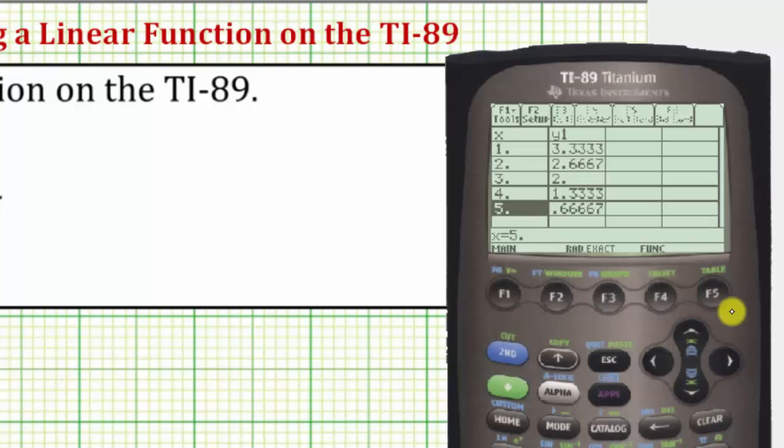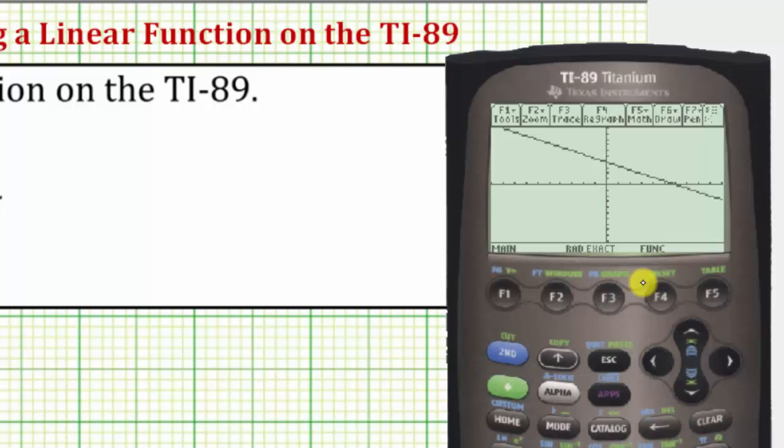Let's also go back to the graph now by pressing diamond F3. Another way to find points on the line would be to adjust the window so that if we press trace, the X and Y values would be more convenient.